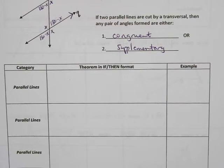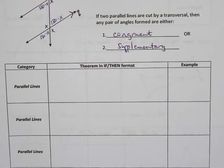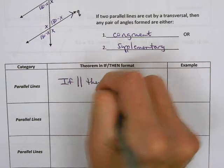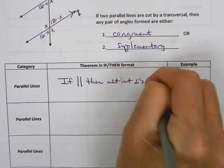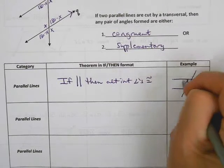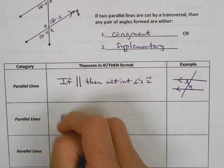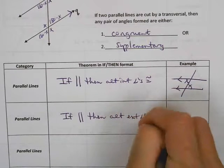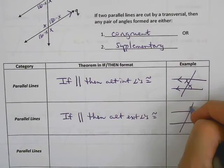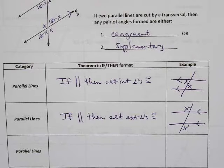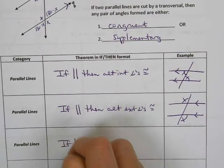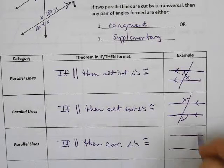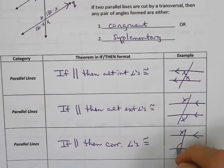We're going to reverse the theorems we had previously. We had: if alternate interior angles were congruent then the lines are parallel. Now we're going to say if the lines are parallel then alternate interior angles are congruent. We also had alternate exterior: if the lines are parallel then alternate exterior angles are congruent. And we had corresponding angles: if parallel then corresponding angles are congruent.